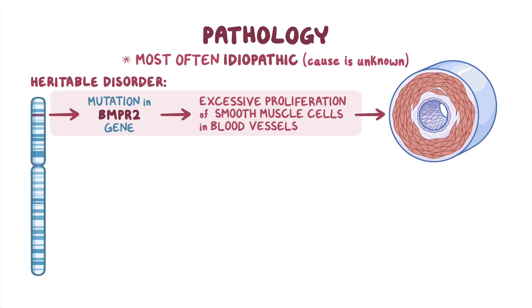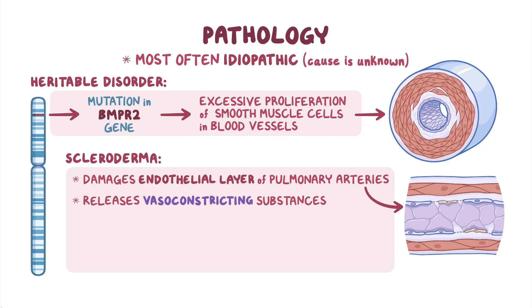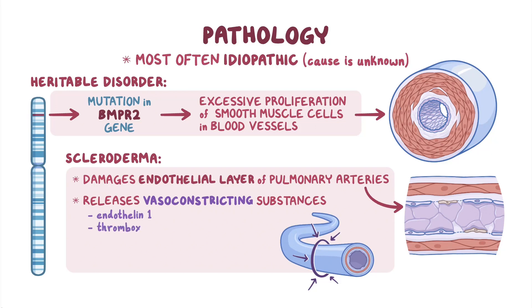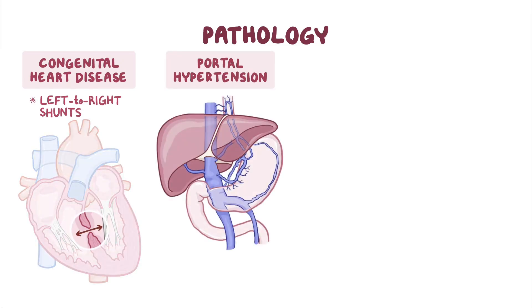Another cause of PAH is connective tissue disorders, like scleroderma, which damage the endothelial layer of the pulmonary arteries, leading to a release of vasoconstricting substances causing tightness and narrowing of the blood vessels, such as endothelin-1, thromboxane, and serotonin, as well as smooth muscle hypertrophy or enlargement. Other causes of PAH include congenital heart disease with left-to-right shunts and portal hypertension, characterized by increased pressure in the portal vein that leads blood from the digestive tract to the liver.